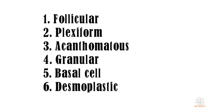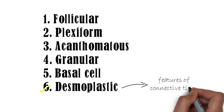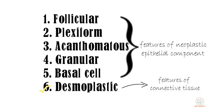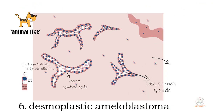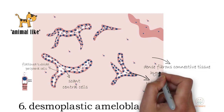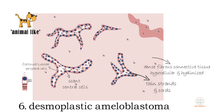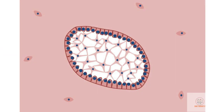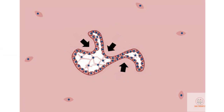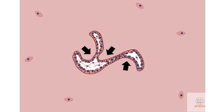Interestingly, this is the only subtype of ameloblastoma where the name describes the connective tissue of the tumor and not the neoplastic epithelial islands. The word desmoplasia means growth of a very dense fibrous connective tissue which is hypocellular and hyalinized. It is theorized that this dense stroma compresses or squeezes the epithelial islands into their bizarre shapes.